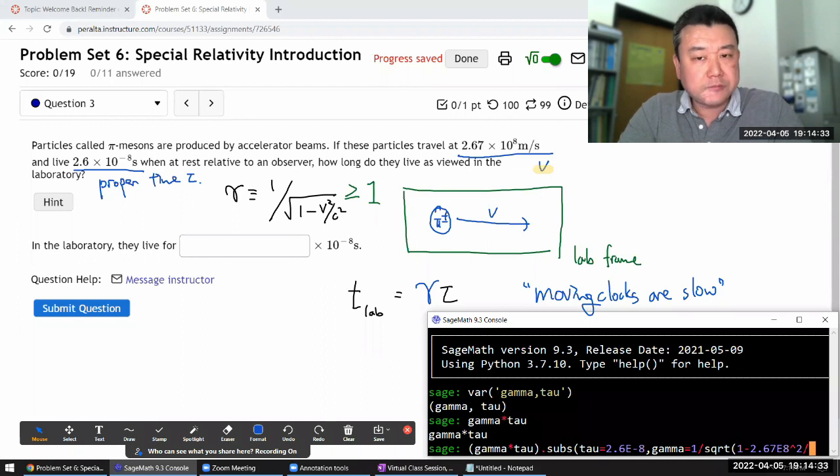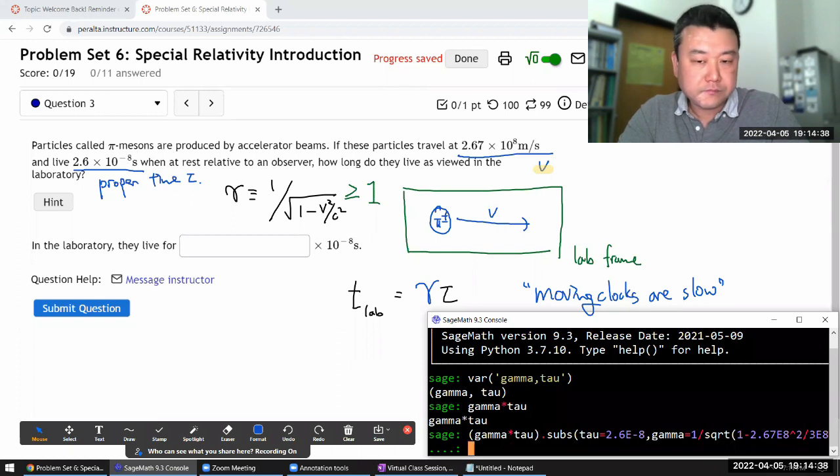Squared divided by c squared, which is 3 times 10 to the power of 8 meters per second squared.